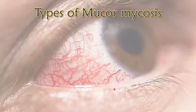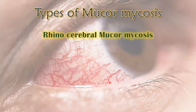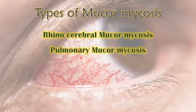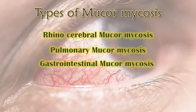Let's discuss the various types of mucormycosis. The first is rhinocerebral mucormycosis, which occurs in the brain or sinuses. The second is pulmonary mucormycosis, which occurs in the lungs. These are the two major types frequently observed among COVID-19 patients and COVID-19 survivors. The third is gastrointestinal mucormycosis, which occurs in the gastrointestinal tract and mainly affects infants — in adults, gastrointestinal mucormycosis cases are very rare.